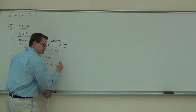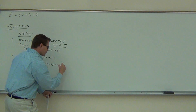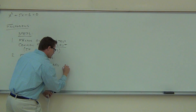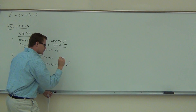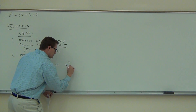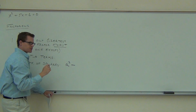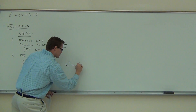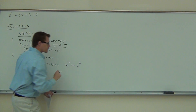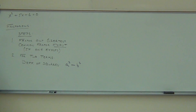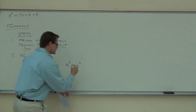Here's the general form of a difference of squares: you have some quantity A squared, minus some quantity B squared. That's the general form for a difference of squares. The cool thing about a difference of squares is they can always be factored — always, always, always.